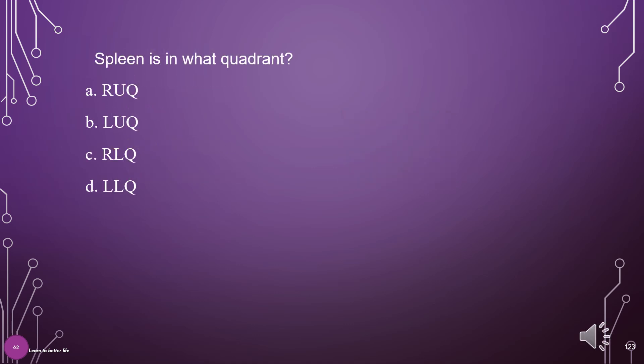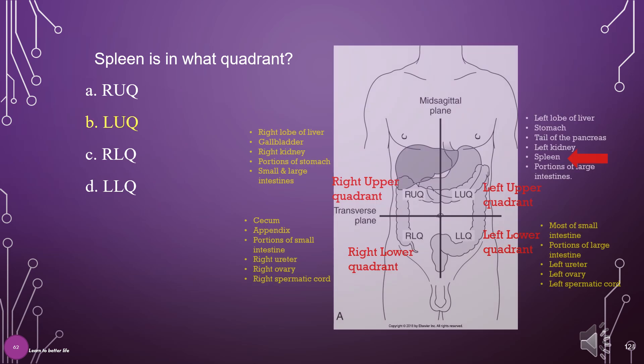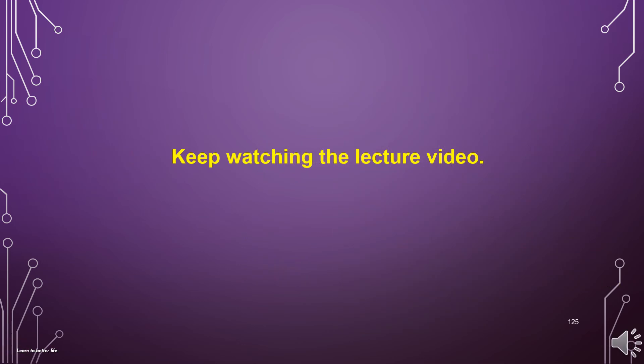The spleen is in what quadrant? A. Right upper quadrant, B. Left upper quadrant, C. Right lower quadrant, D. Left lower quadrant. The answer is B: Left upper quadrant.